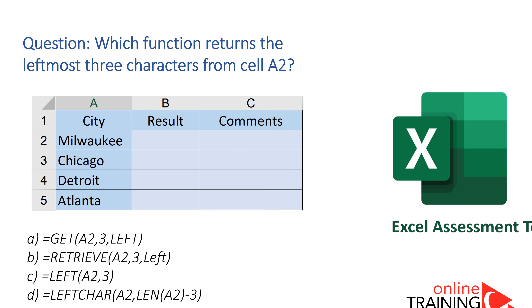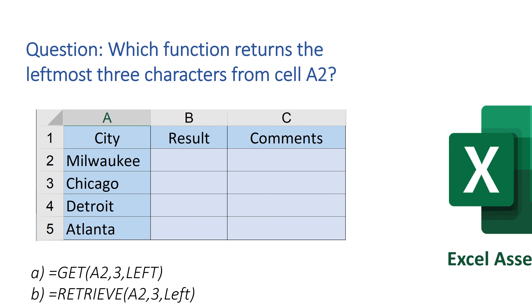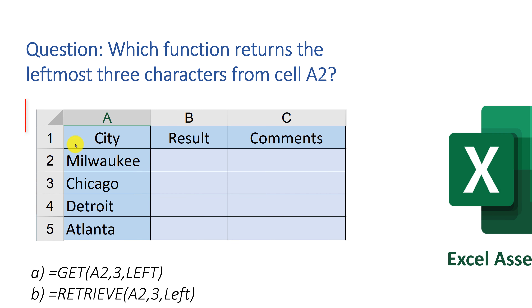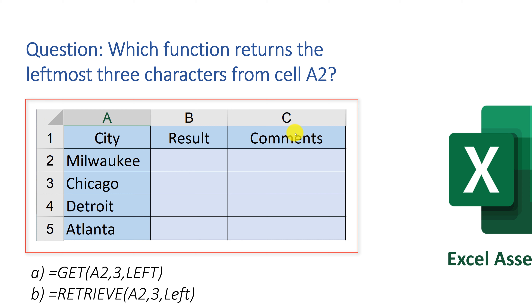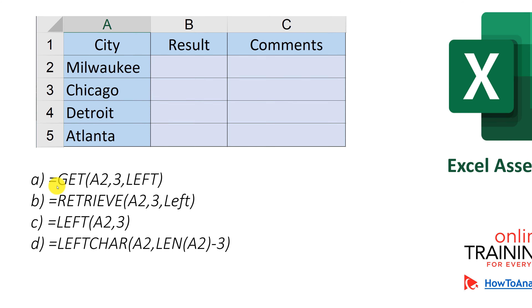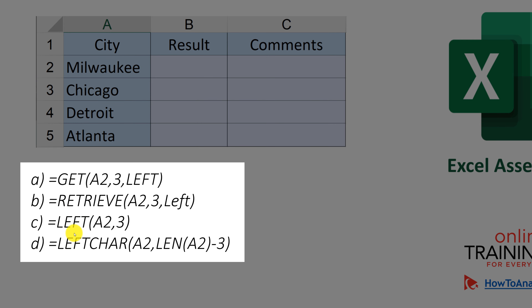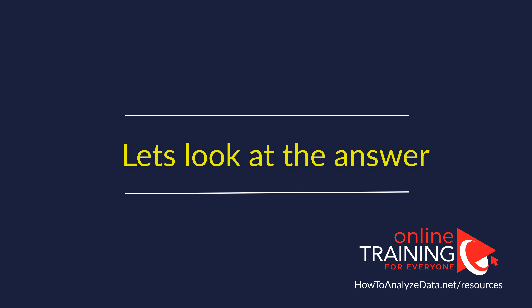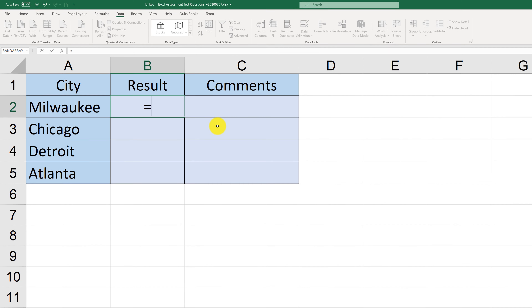Very frequently, you might be presented with a question testing your knowledge of Excel lookup functions. For example: which function returns the leftmost three characters from cell A2? The screenshot shows four cities in column A, and you need to calculate the value in column B. Choices are: get function, retrieve function, left function, and left char function. To get the leftmost characters from a string, you use the LEFT function. When you type LEFT, it shows that it returns a specific number of characters from the start of a text string.